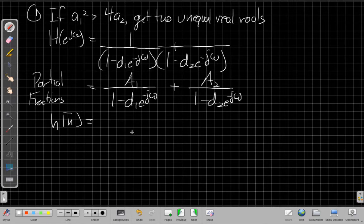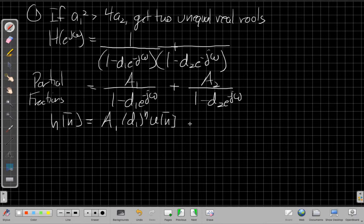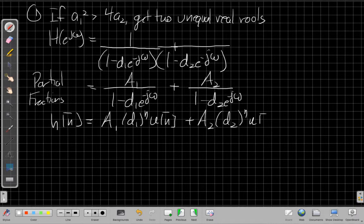to get h of n, again, a good chance to pause the video, practice on your own, and come back and check against my answer. Right, we'd get A1. This first term would give me A1 times d1 to the n u of n. And the second term would be A2 times d2 to the n u of n.